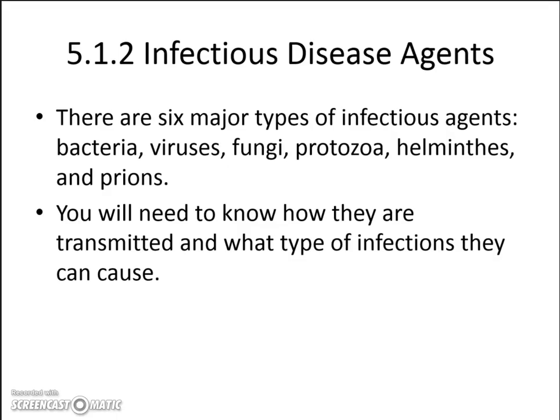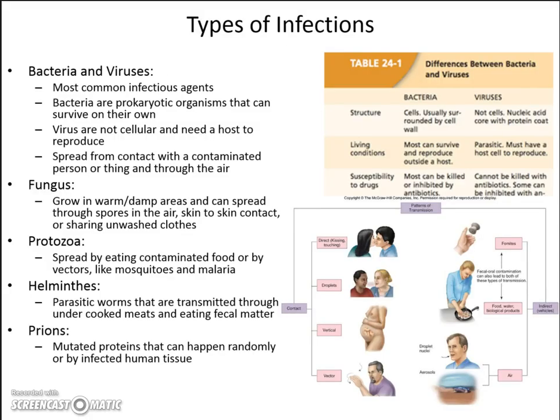This brings us to infectious disease agents. There are six types you're going to need to know for the test — you'll need to know how they're transmitted and what type of infections they can cause. Bacteria and viruses are the most common. A bacteria is a single-cell organism — we classify that as a prokaryote — and they can survive on their own. However, viruses cannot survive on their own; they have to be inside a host in order to reproduce. Both can be easily spread through contact with contaminated persons, person to person, and through the air.